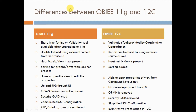The first difference is that there is no testing or validation tool available after upgrading to 11g. If we talk about migrating from 10g to 11g, there is no validation tool to confirm whether the migration was done correctly or not. That tool is not provided with OBI 11g, whereas in 12c, Oracle has provided a validation tool which will validate the entire upgrade process.